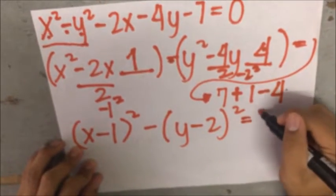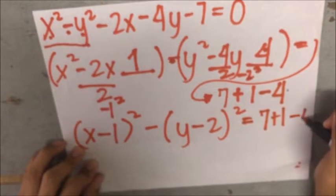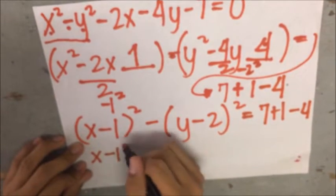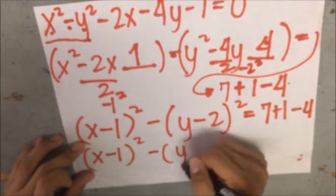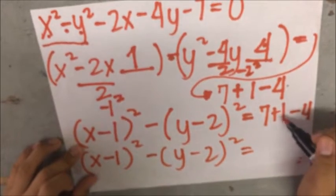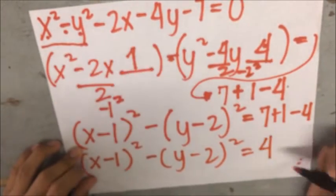It equals 7 plus 1 minus 4. It will give us the value of (x minus 1) squared minus (y minus 2) squared. It was 7 plus 1, 8 minus 4, becomes 4.